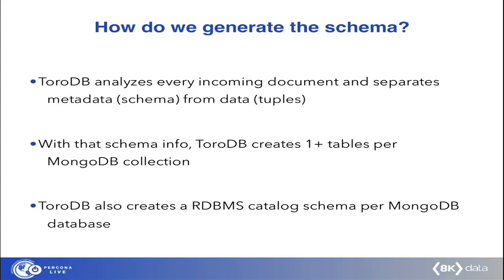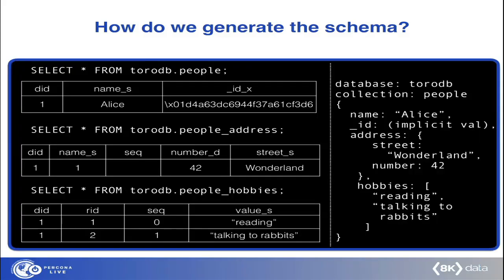TorDB also generates a catalog on the relational database that acts as a repository of the structure it has been dynamically generating. For example, if we take a document belonging to a database called TorDB with a collection called 'people' and some properties, this will be translated to three tables. The first — the root table — takes the schema name from the database name and the table name from the collection name. It has internal fields like the DID (document ID), and then one column per field at the root level that is not a nested structure — in this case, the name and the underscore ID.